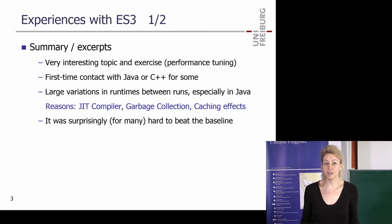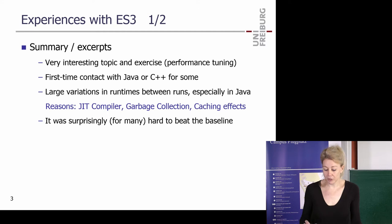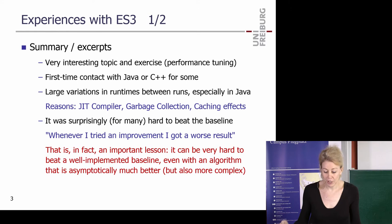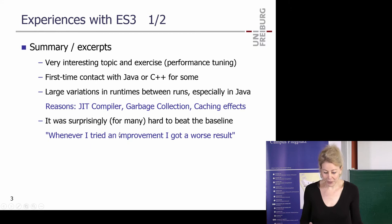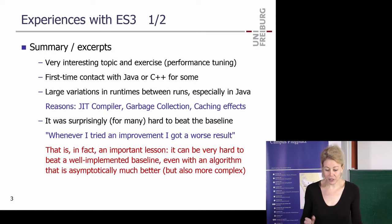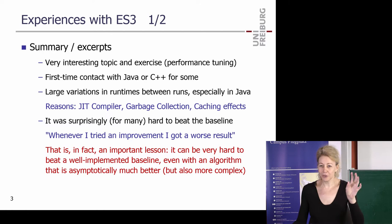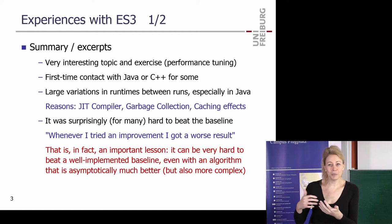What many of you found: it was surprisingly hard to beat a baseline. We had a very simple baseline — the algorithm from the first lecture, just a zipper linear-time merge. Very simple algorithmically, not great, linear time. We had much better algorithms but they were also much more complex. One of you wrote — speaking for many — that you try to improve something and then it actually got worse. This is an important lesson: if you have a simple baseline and implement it really well, it's really hard to beat. Added complexity can make it worse, and this was intentional.